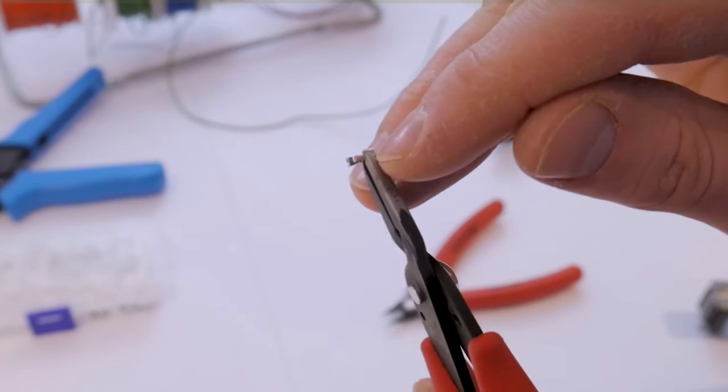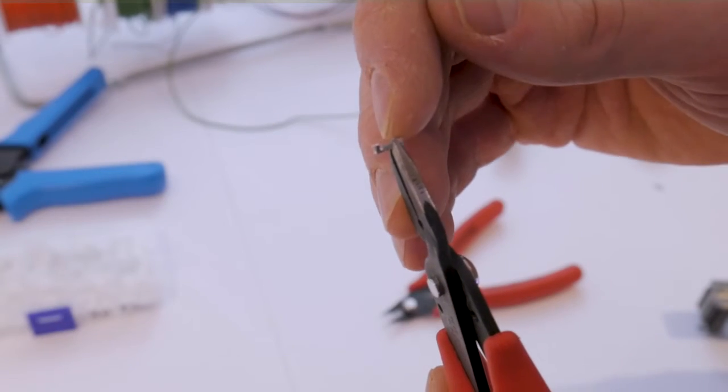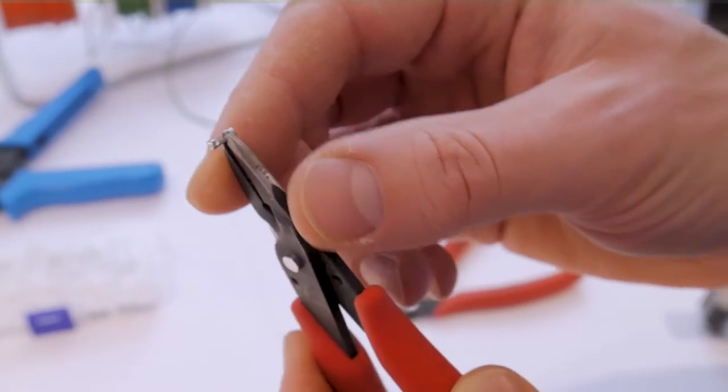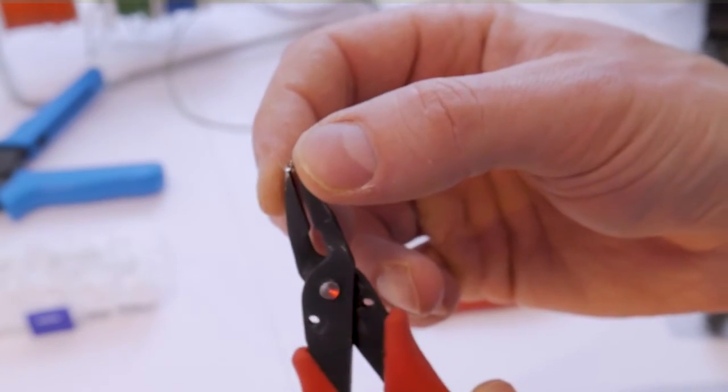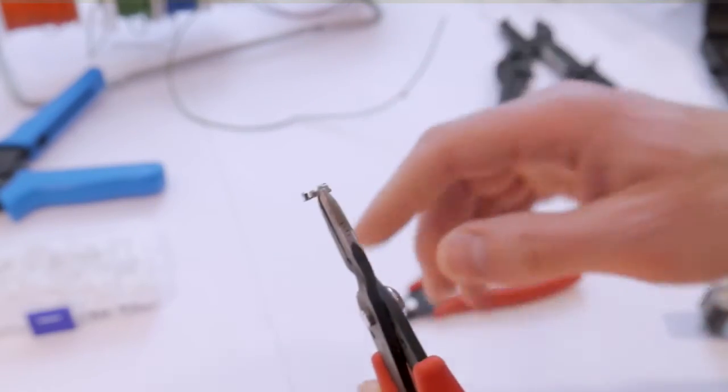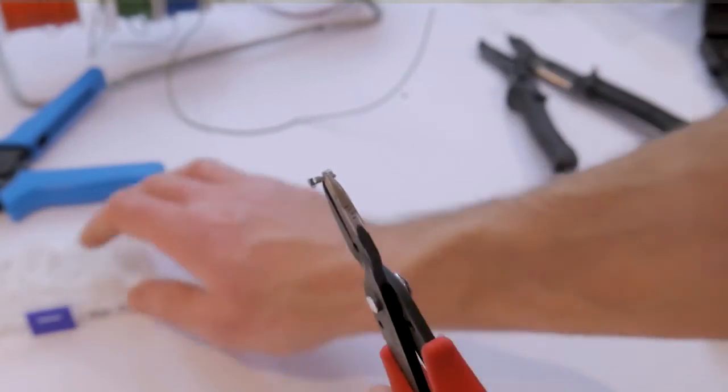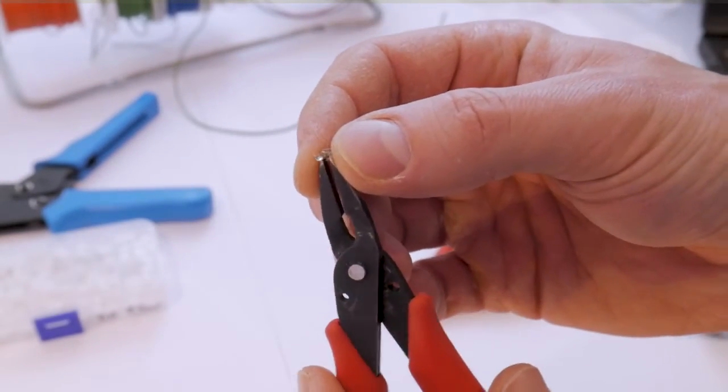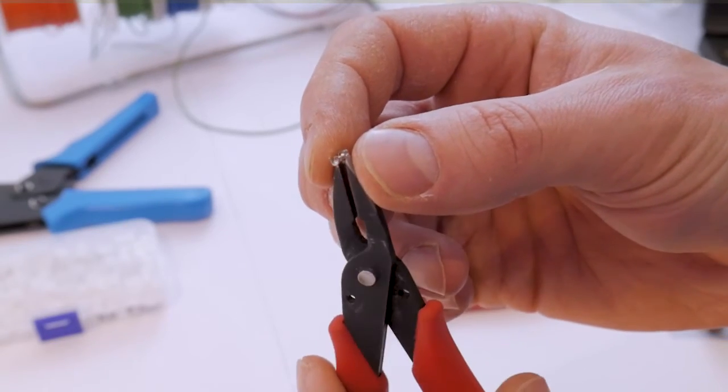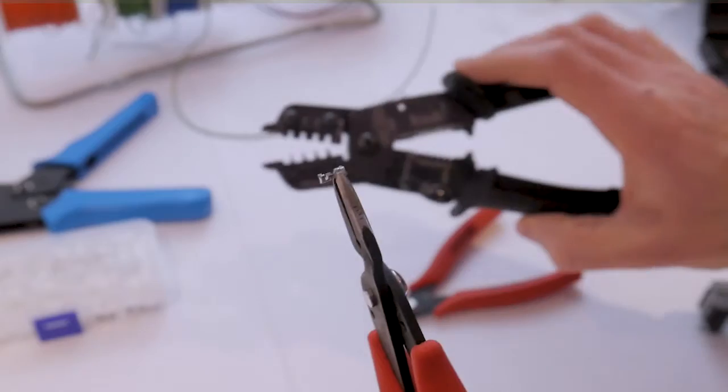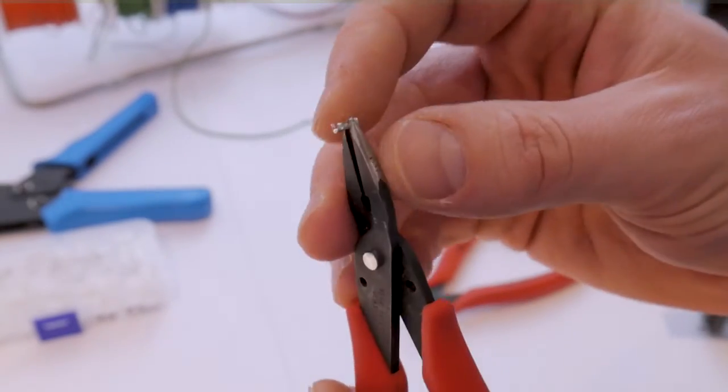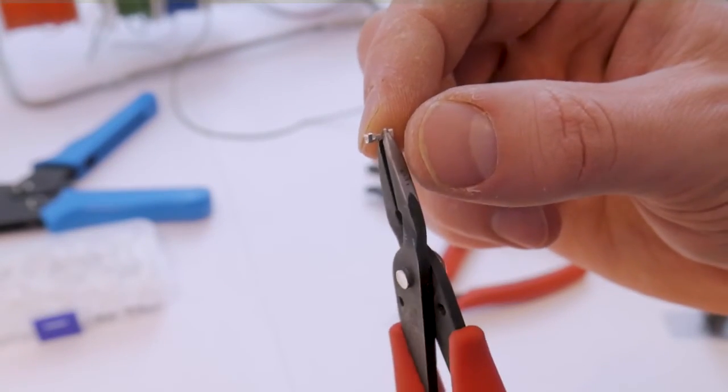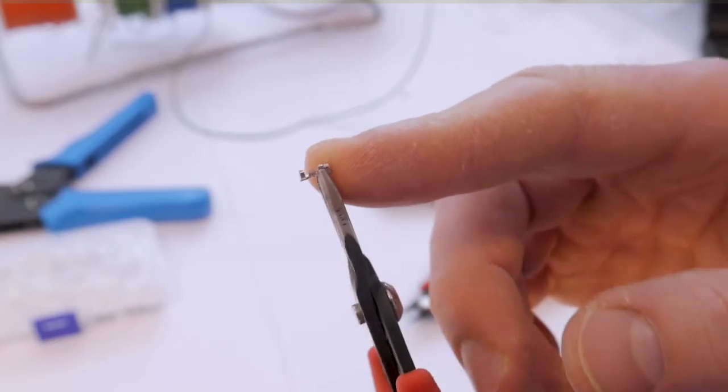And now I trim them down almost to be in line with the section of the terminal here that's meant to crimp down onto the bare wire, and this gives me a much higher chance of success, pretty much 100% with this style of tool. And with the ratcheting tool it's about 75-25, where three quarters of the time I get a proper crimp or maybe a quarter of the time it still fails. But we'll see with this style of crimping tool how well it works when I just make that tiny little modification. And I suggest that you guys make that modification as well and we'll get a nice clean crimp.